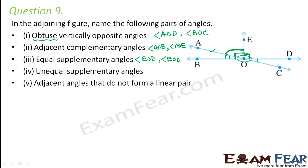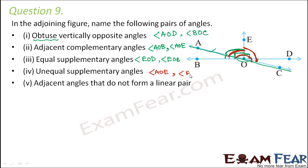Unequal supplementary angles: where do you see supplementary angles that are not equal? We see a straight line here — line AOC — so this angle is 180 degrees. This angle is formed by two unequal angles: one is greater than 90 degrees and the other is less than 90 degrees. They are supplementary but unequal. The answer is angle AOE and angle EOC.